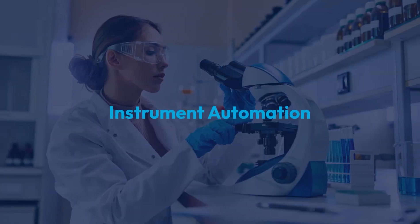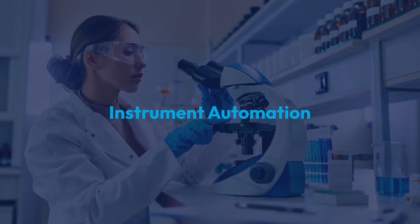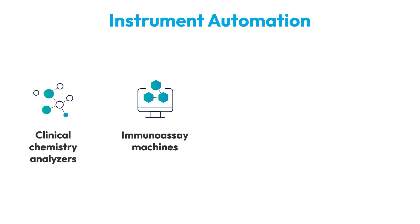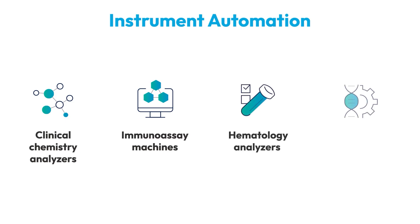Instrument automation is the cornerstone of any clinical lab. This category includes systems like clinical chemistry analyzers, immunoassay machines, hematology analyzers, and molecular diagnostics instruments. These technologies are designed to perform complex tests quickly and accurately, minimizing the chance for human error and ensuring consistent, reliable results.